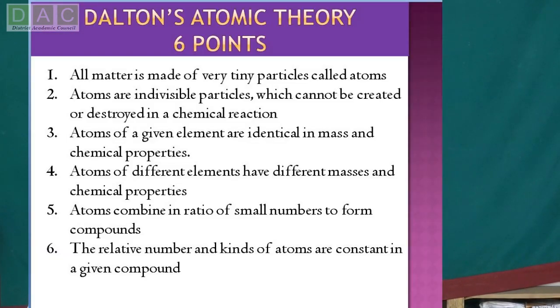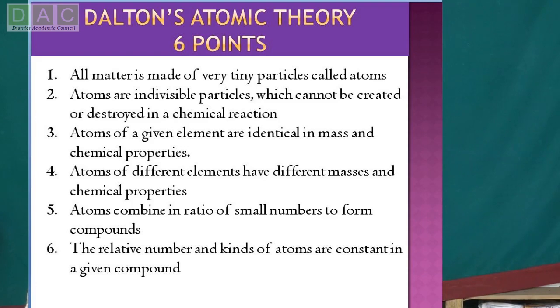The third point of Dalton's theory is that atoms of a given element have similar mass and chemical properties. For example, in carbon element, there are different atoms, but all these atoms have the same mass and chemical properties because they belong to the same element. The fourth point is that atoms of different elements have different masses and chemical properties, because they belong to different elements, so their masses and chemical properties will also be different.